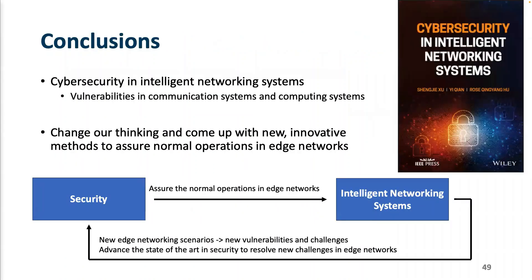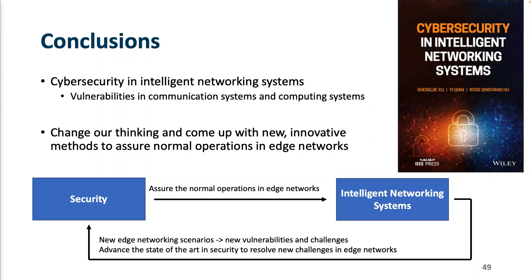To conclude my talk: Cybersecurity in Intelligent Networking System is a big issue. It's time to change our thinking and come up with new and innovative methods to assure normal operations in the edge network. When we build AI and machine learning models, we need to make sure not only that they work, but that they are secure and immune to all new forms of attacks. I'm happy to take any questions.